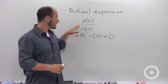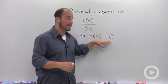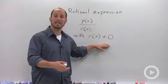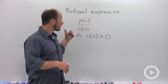We have a polynomial over a polynomial, and more importantly, our denominator cannot be equal to zero. We can't have a fraction where we're dividing by zero. So as long as our denominator is not equal to zero, we are fine.